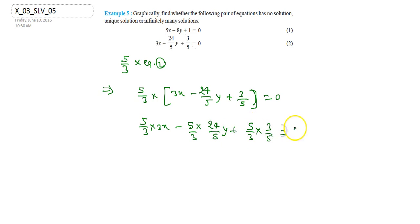This will get cancelled by one time, and it will be 8 times, and it will be 1 times. So I found that the equation will become 5x minus 8y plus 1 equals to 0.